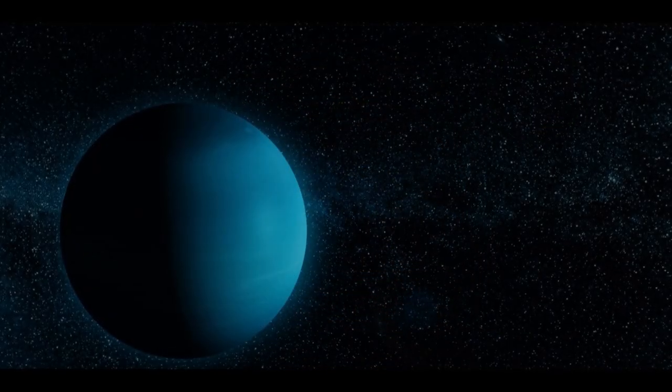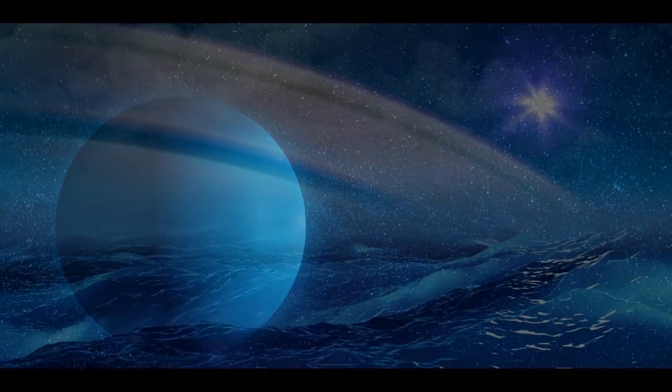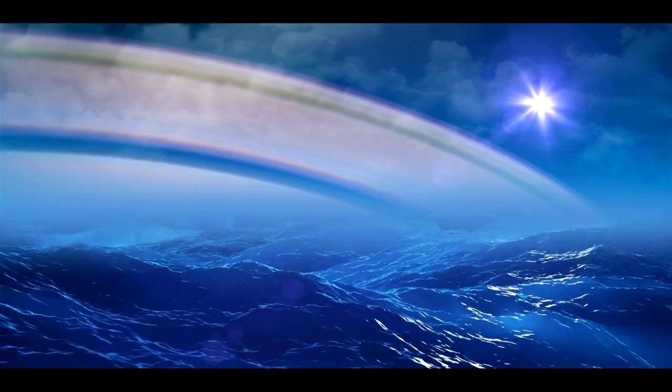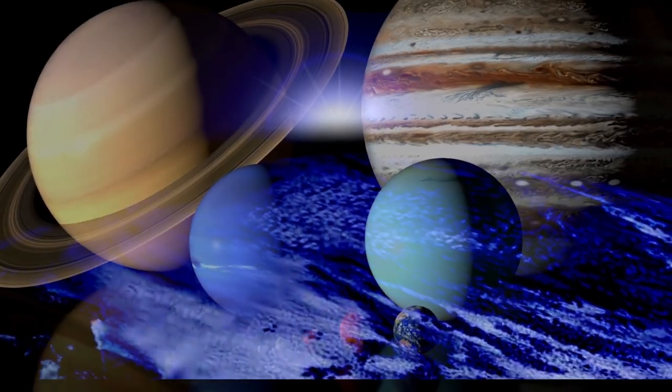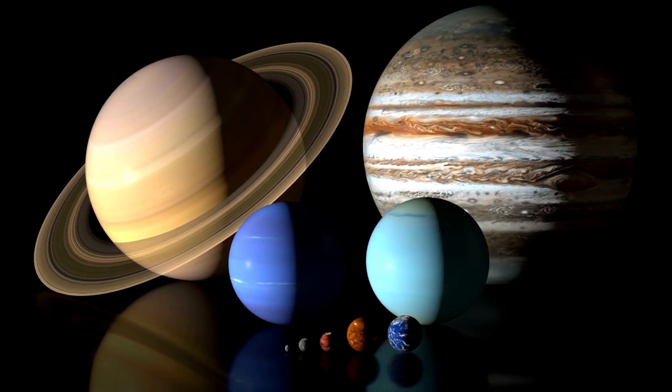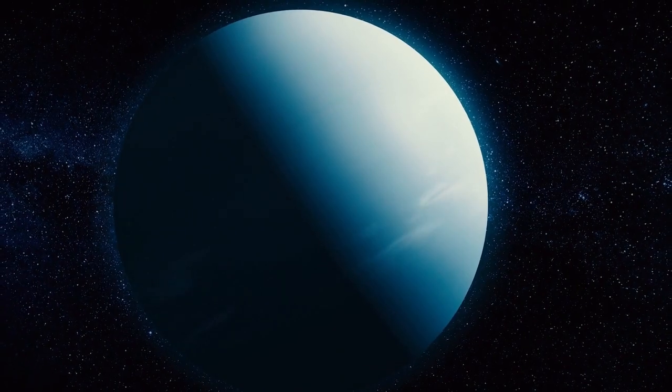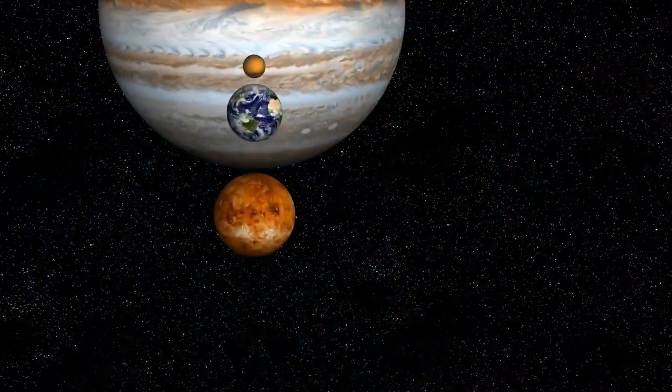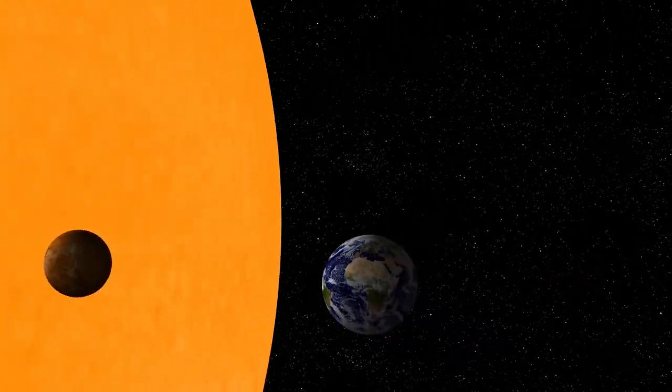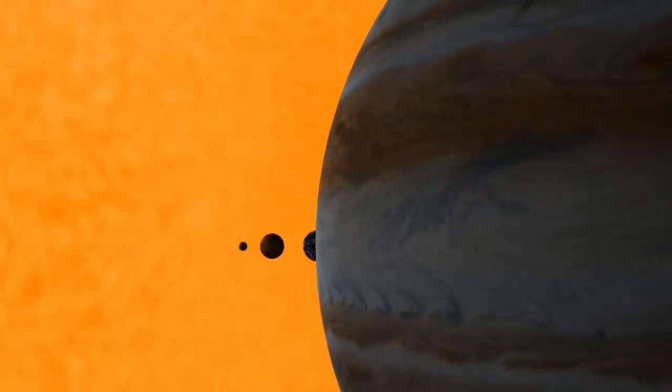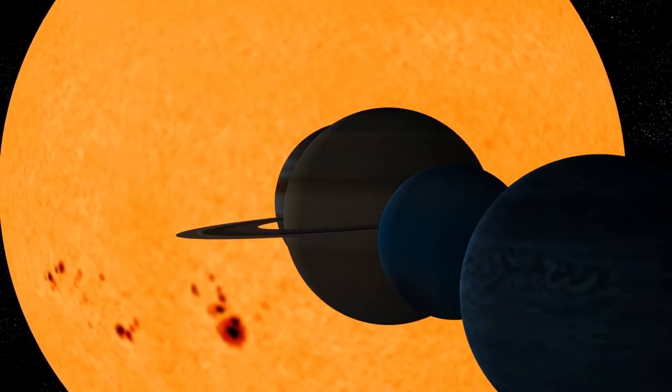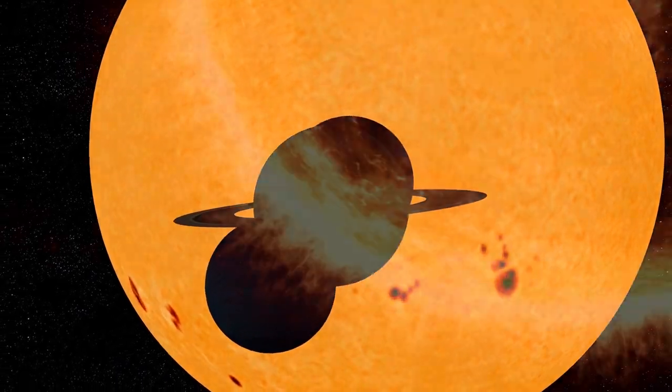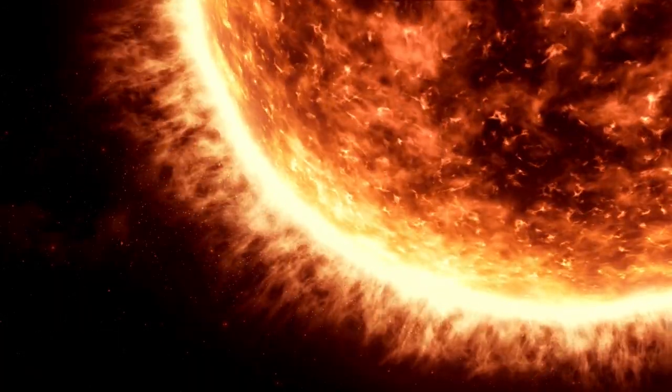With a radius of 15,759.2 miles or 25,362 kilometers, Uranus is four times wider than Earth. If Earth was the size of a nickel, Uranus would be about as big as a softball. From an average distance of 1.8 billion miles or 2.9 billion kilometers, Uranus is 19.8 astronomical units away from the sun. One astronomical unit, abbreviated as AU, is the distance from the sun to Earth. From this distance, it takes sunlight two hours and 40 minutes to travel from the sun to Uranus.